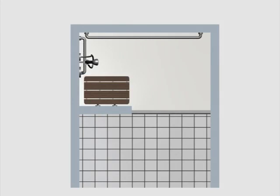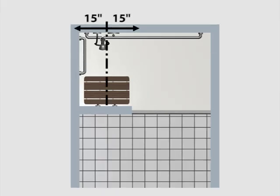The grab bar on the side wall is dimensioned so that it does not overlap the seat. The shower spray unit and controls must be located on the side wall 27 inches maximum from the seat wall or they can be mounted on the back wall opposite the seat within 15 inches on either side of the seat center line. Placement on the back wall is allowed only when a seat is provided.